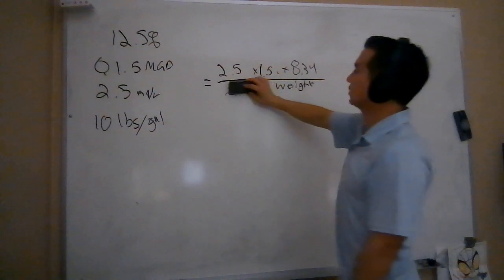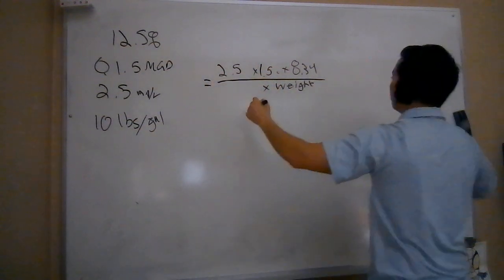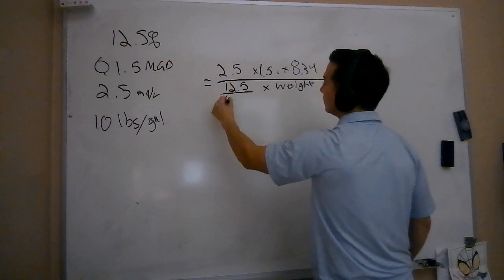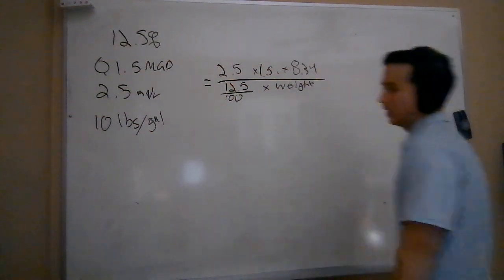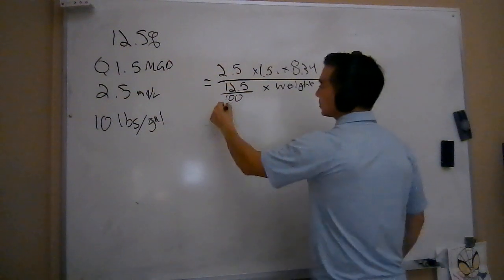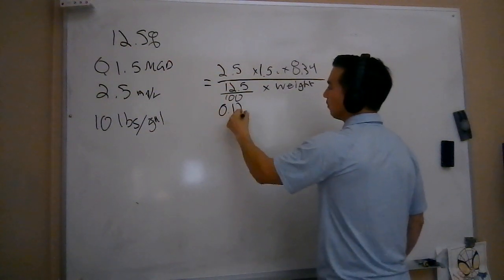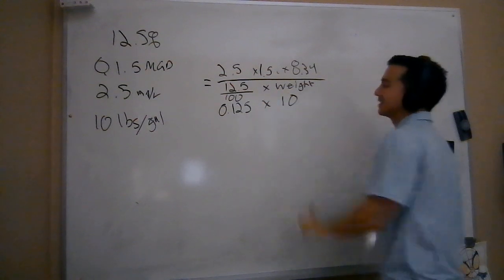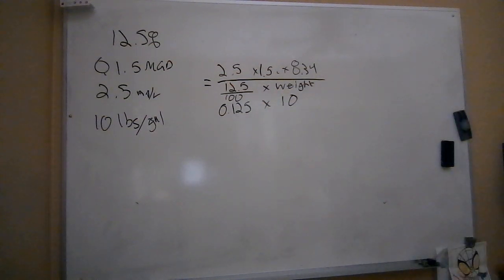The percent strength, that's that 12.5%, remembering that 12.5 needs to be divided by 100 - we want to plug in the decimal version of this. So what does it look like? It looks like 0.125 times the weight, in this case that's that 10 pounds per gallon.